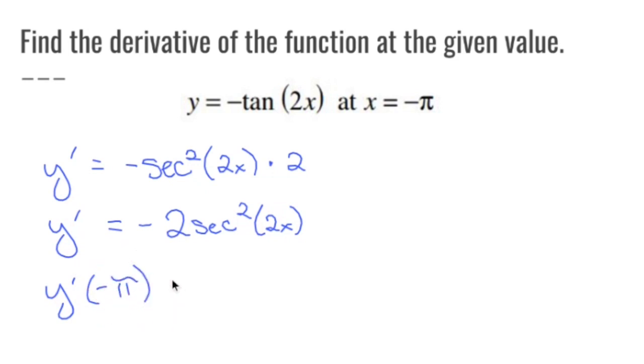So I have to calculate negative 2 times secant squared of 2 times negative pi or negative 2 pi. Fun fact. Secant squared of negative 2 pi is 1. How did I do that so fast? I paused the video and typed it in. So when you multiply negative 2 to it, you get negative 2.